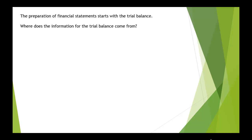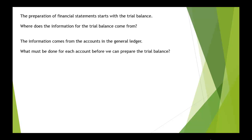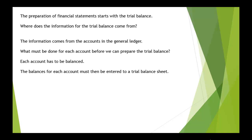The preparation of financial statements always starts with obtaining the trial balance. So where does the information for the trial balance come from? The information comes from the accounts which are held in the general ledger. You have to look up each account in the general ledger, and then you must balance each account. It's the balances from each account that are then entered to a trial balance sheet.